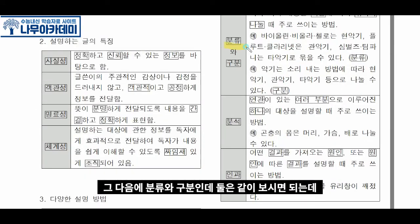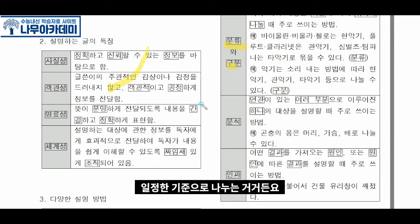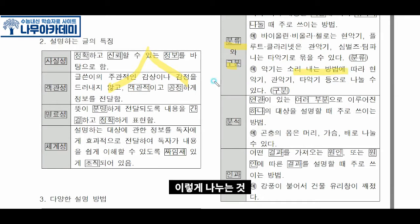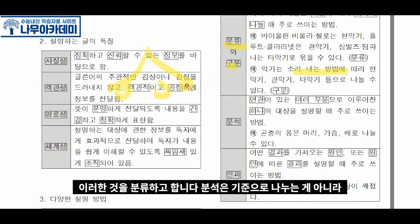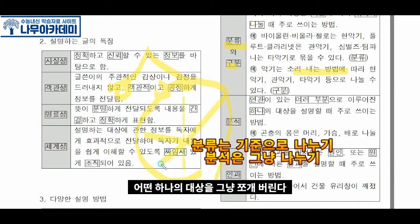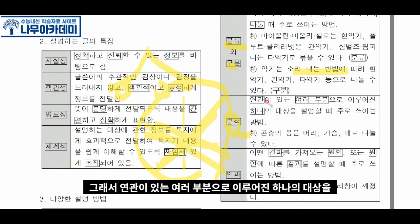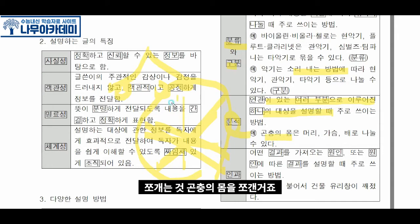그 다음에 분류와 구분인데, 일정한 기준으로 나누는 거거든요. 소리 내는 방법에 따라서 이렇게 나누는 것, 이러한 것을 분류라고 합니다. 분석은 기준으로 나누는 게 아니라 어떤 하나의 대상을 다 쪼개버리는 겁니다. 연관된 여러 부분으로 이루어진 하나의 대상을 쪼개는 것으로, 곤충의 몸을 쪼개서 설명하는 것이 분석입니다.